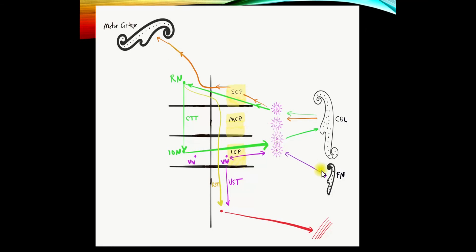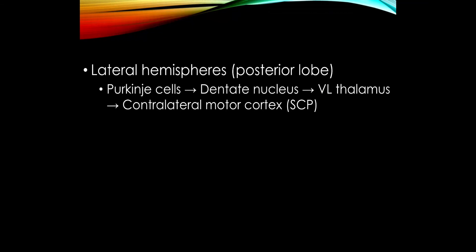The flocculonodular lobe via the fastigial nucleus influences the vestibular nucleus and the vestibulospinal tract, and also the reticulospinal tract. Output from the globose and emboliform nuclei goes to the red nucleus, which influences the rubrospinal tract. And as we move into the lateral posterior hemisphere, via the dentate nucleus, this goes back mostly entirely to the opposite motor cortex — through VL of the thalamus to the contralateral motor cortex.